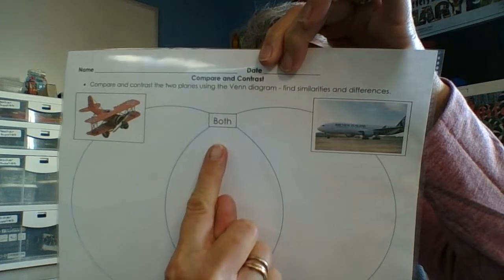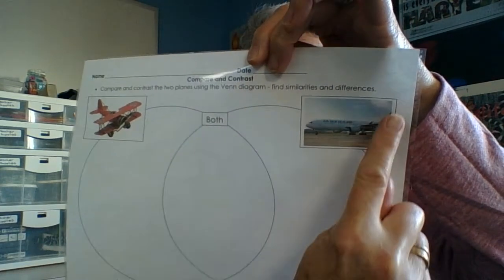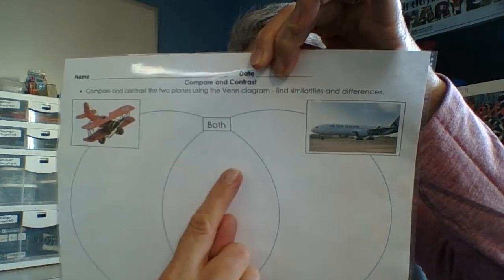They both have wheels so I could put that there, and when I look at the picture I notice that they both have tails.